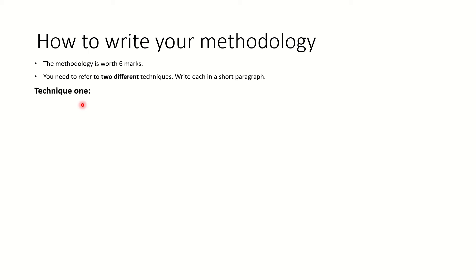Let's look at technique one. In this assignment, because you have not gone into the field and done your own primary first-hand research, you have used secondary sources. This means that you have read and researched online or in books. This is how to write a secondary source methodology.